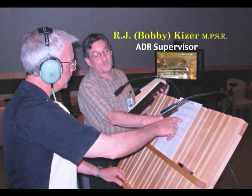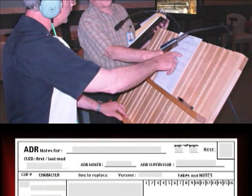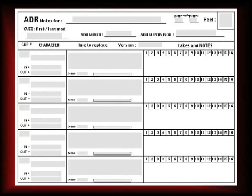Here is ADR supervisor RJ Bobby Kaiser conferring with an actor on the performance of a given line. Let us look at the new kind of ADR form that he uses and learn the reasons why. This is another style of an ADR cue sheet. Note that this form is landscape in layout — it has fewer cues per page but is much easier for the talent to work with and far more room for notes. This is exactly the ADR format that ADR supervisor Bob Kaiser uses as he handles major projects all over the world.